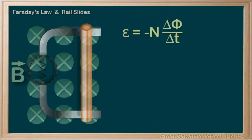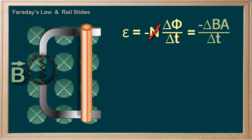Let's first analyze this with our flux knowledge. E equals negative N times the change in flux over the change in time. In this case, N is 1 — we effectively have one loop. The change in flux is the change in BA, and we know that B is constant, so let's move that out to the front. It's only the area A that's changing.